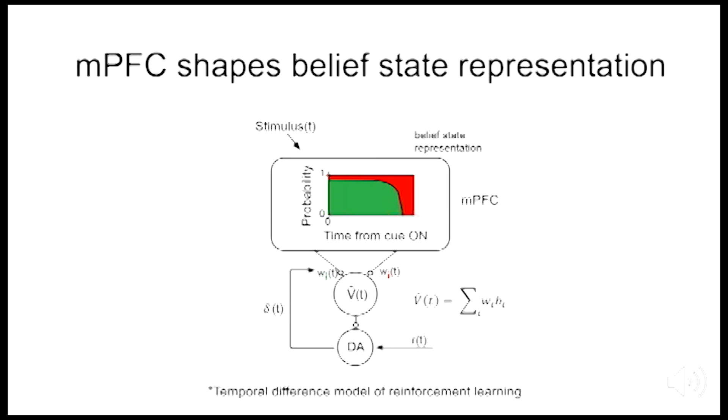Our computational modeling further confirmed our intuition. That hidden state inference shaping this belief state across time seemed to be impaired, rather than interval timing itself upon medial prefrontal cortex inactivation. Briefly, our model is a temporal difference model that computes value as a linear sum of the belief state and the weights learned for each state. Our model is compatible with the medial prefrontal cortex playing a role in inferring the statistical structure of the environment, which is then used by subcortical reinforcement learning circuits to compute value and errors in value prediction.